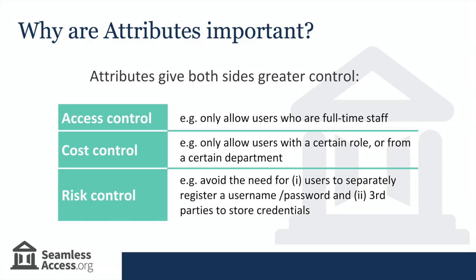Attributes are important because they give both sides of the authentication transaction greater control, and this control can be valuable in a variety of different ways. For example, access control: an institution can choose to make a resource available only to users who are full-time staff and students, preventing alumni or contractors from access. Cost control: a library can limit resource access to users with a certain role or from a certain department.